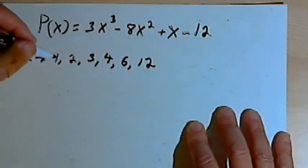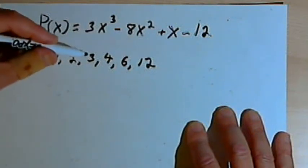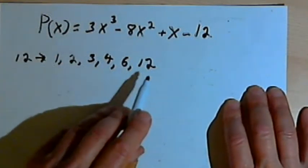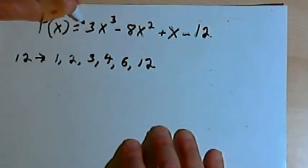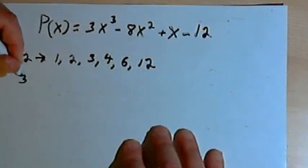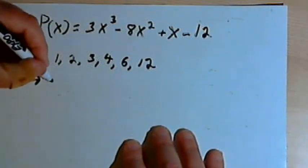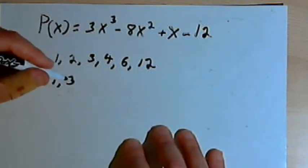Now these are all positive and negative numbers - in other words, plus or minus 1, plus or minus 2, and so on. But I'm not going to put the plus or minus signs in until the end. Then I also want to take the leading coefficient, that's this 3 here, and write all of its factors. Well, that's just 1 and 3.